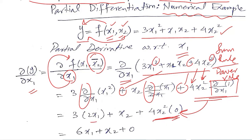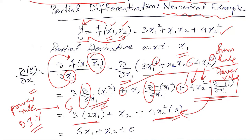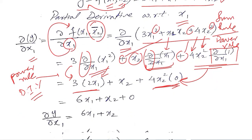For the first term, 3 comes out as a coefficient and the remaining term is differentiated using the power rule — this is a DIY for you. For the middle term, x2 and x1 are being multiplied; x2 is considered a constant so it comes out of the derivative, and the derivative of x1 is 1, so finally that term becomes x2. We then simplify the whole expression and get the final answer.